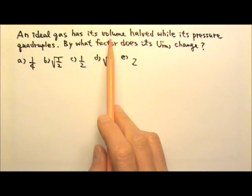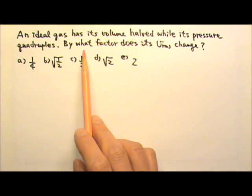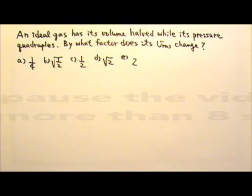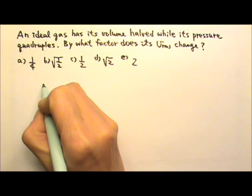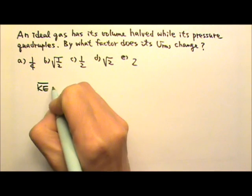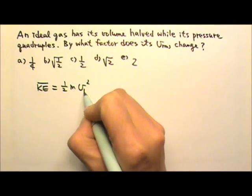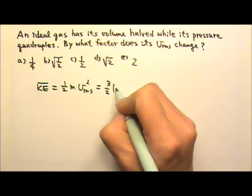An ideal gas has its volume halved while its pressure quadruples. By what factor does its root mean square speed change? From the kinetic theory, the average translational kinetic energy, which is one-half mv squared — where v is the root mean square speed — equals three-halves kT.